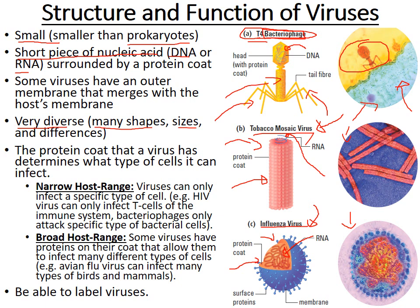Some viruses have a membrane, such as the influenza virus, which is derived from the host cell it infects. The protein coat of the virus acts almost like a key, and the proteins on that coat determine what type of cell the virus can infect. Some viruses have a narrow host range, meaning they can only infect very specific types of cells — for example, the HIV virus only infects T cells of the immune system, and bacteriophages can only infect specific bacterial cells.